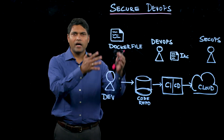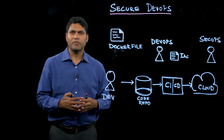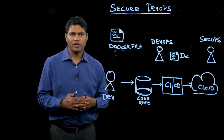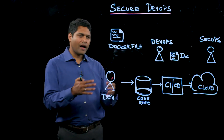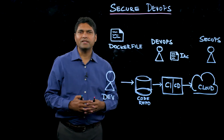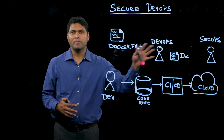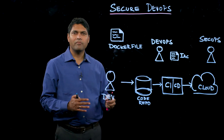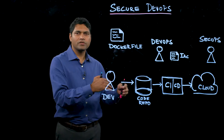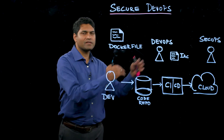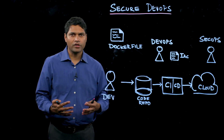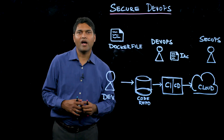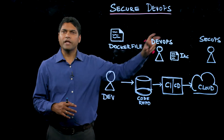Developers are downloading Docker files and container image files from the internet, leveraging that to build and test their custom code for their applications. That information gets trickled down into CI/CD pipelines which are managed by DevOps teams. DevOps teams write infrastructure as code templates which help them provision resources required to run the application inside the cloud in an automated fashion. All these things come together to run the application in production environments inside the cloud.